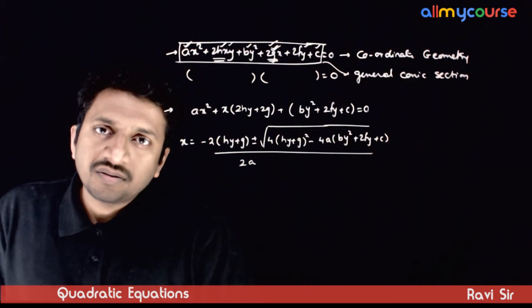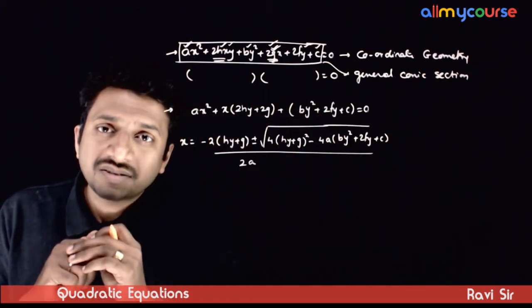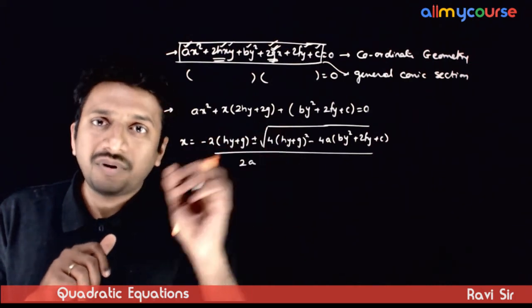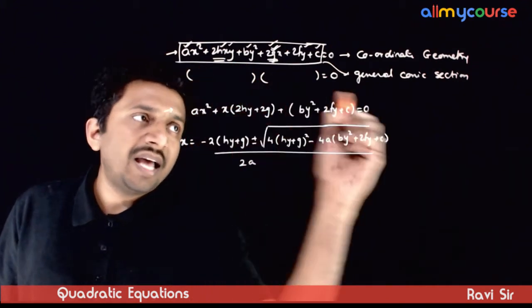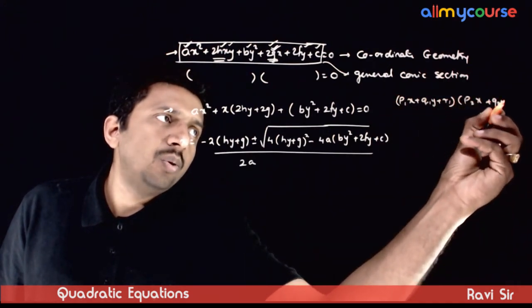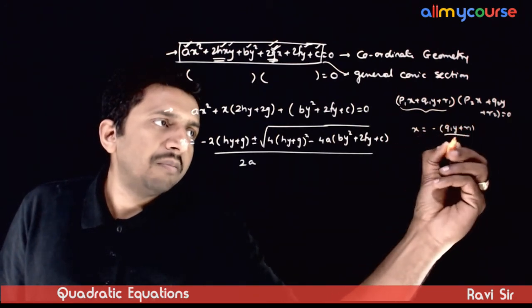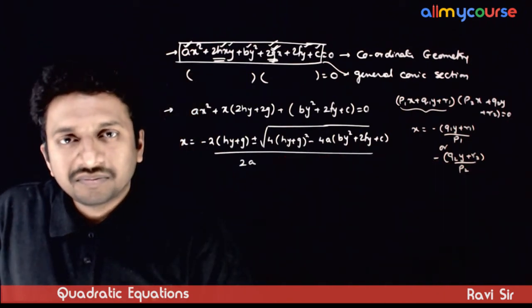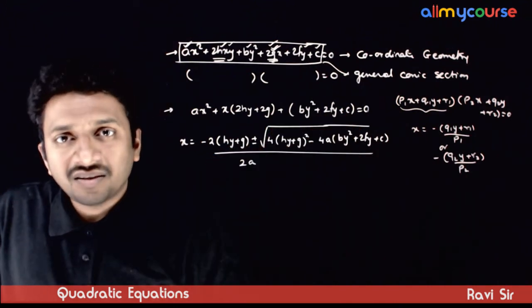If this can be separated into two linear factors, then x should be able to be written as a rational function of y — that is, there should not be any square roots. Because if the expression can be written as (p₁x + q₁y + r₁)(p₂x + q₂y + r₂) = 0, then x can be written as −(q₁y + r₁)/p₁ or −(q₂y + r₂)/p₂. So if this can be factorized, x must be a rational function of y with no square roots.